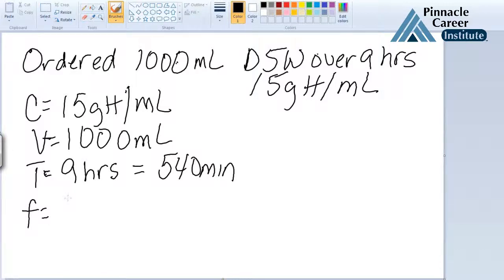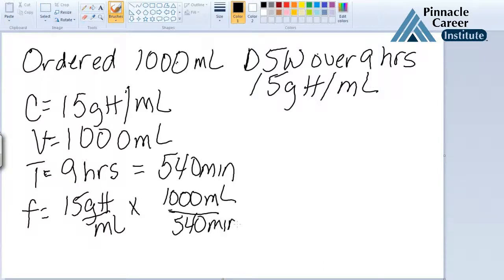So your equation is 15 gtt per mL times 1,000 milliliters over 540 minutes. And just like the previous problem we did, your milliliters is going to cancel out. So you'll multiply across and round, and you'll get 28 gtt per minute.